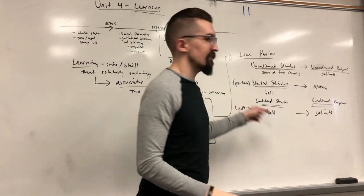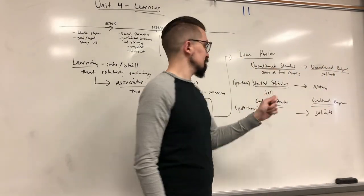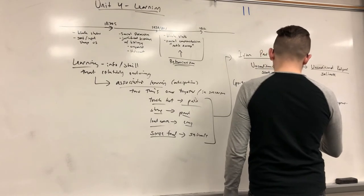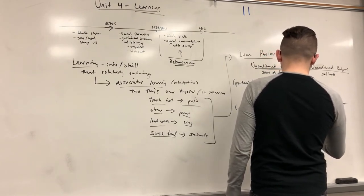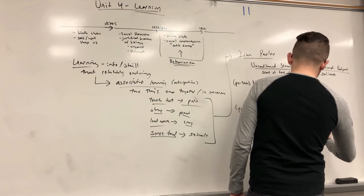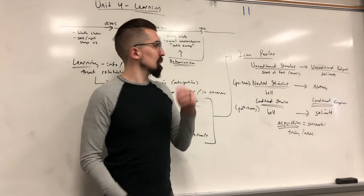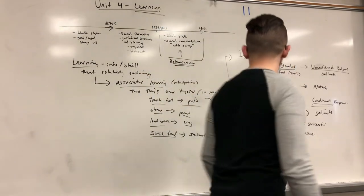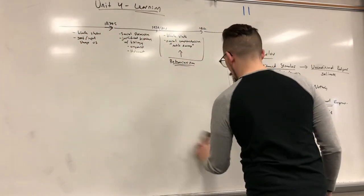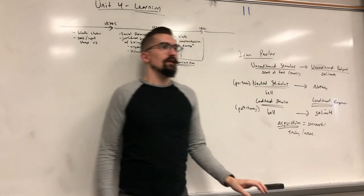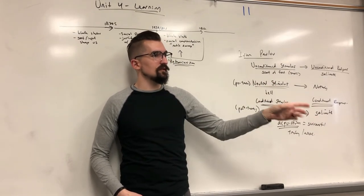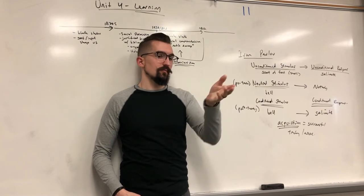When you've successfully trained the dog — when ringing the bell reliably produces salivation — that's called acquisition, meaning you've successfully trained the association. Now let's do another example using the Little Albert experiment, which we've analyzed before for its ethical problems.